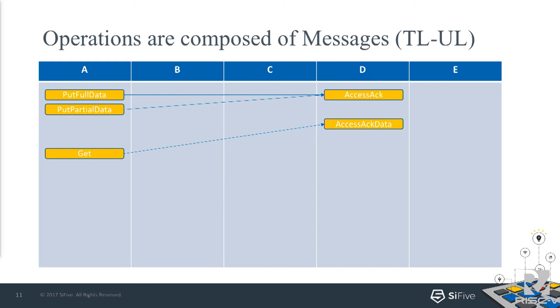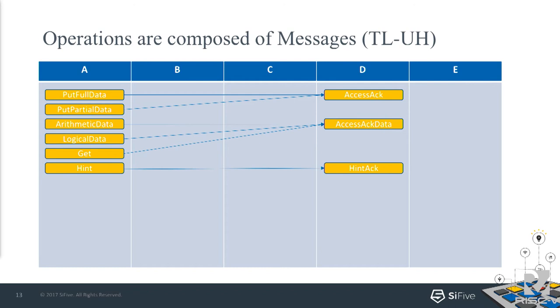That's the bare minimum you can implement and still be TileLink conformant. The next level, TL-UH, adds atomic operations — arithmetic-data and logical-data atomic types — and hints like 'I would like you to have this region ready for me to pour data into' or 'I'd like to have this prefetched.' Another thing to point out is that in TileLink, every request has a response. But in TL-C, some messages are both a request and a response.